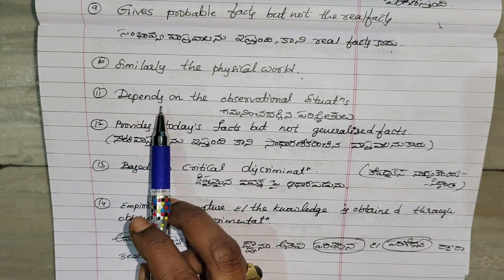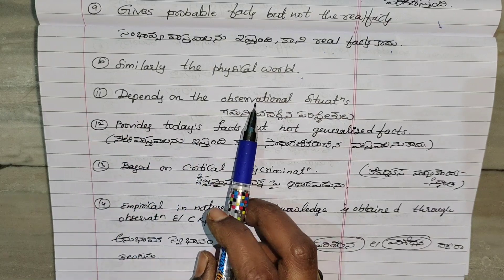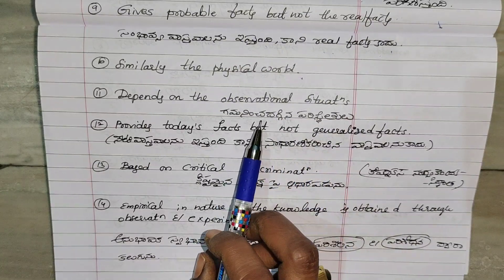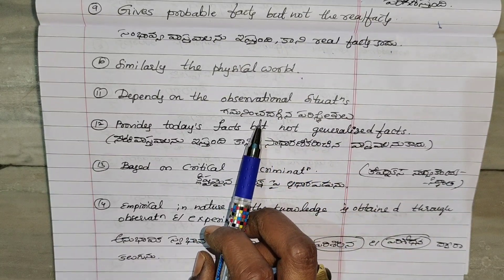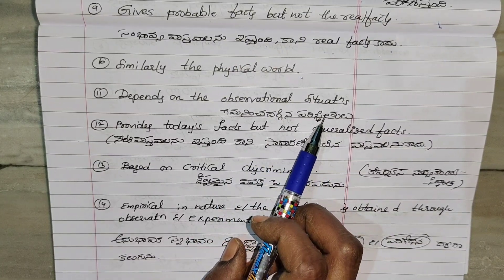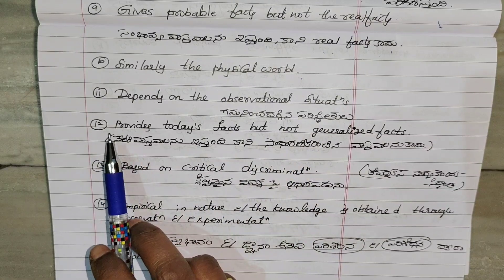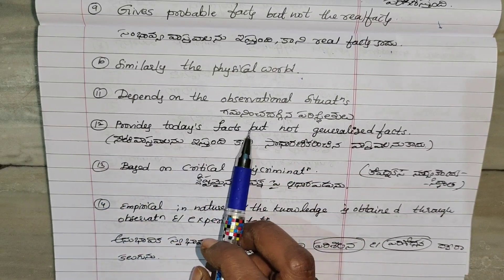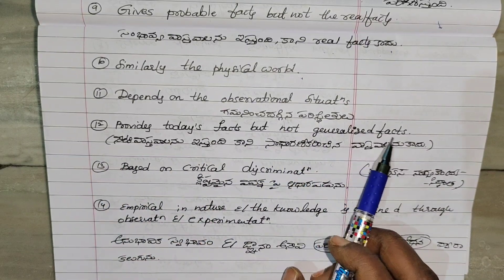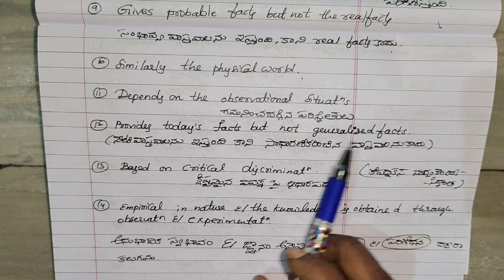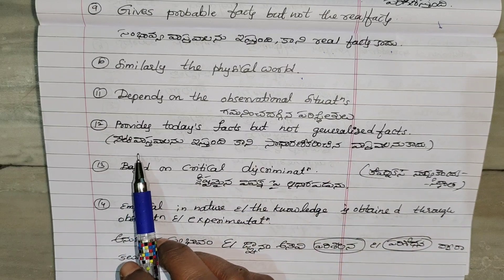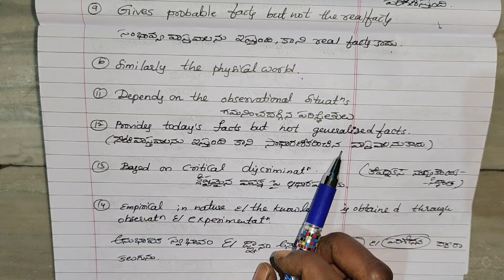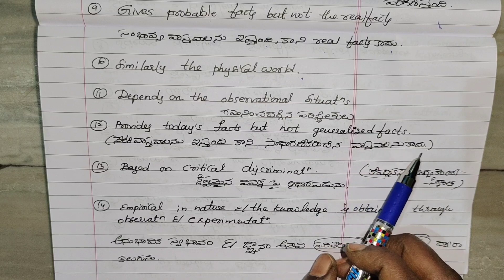Science depends on the observational situations. Science depends on the government. Next, science provides today's facts but not generalised facts. Science depends on the observational situations.